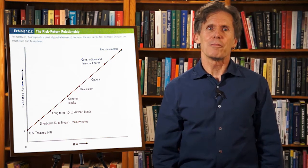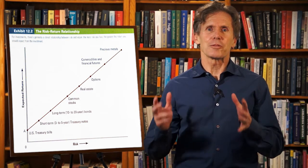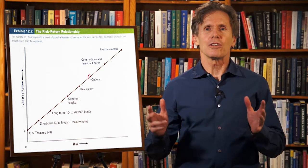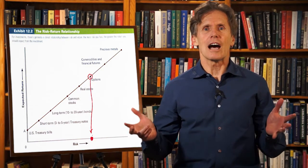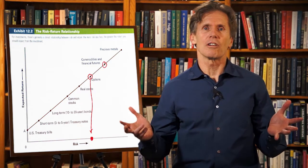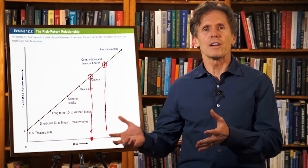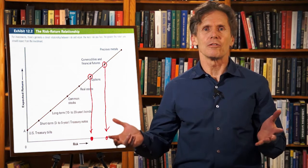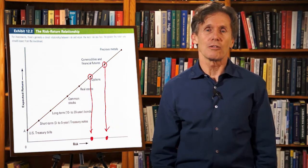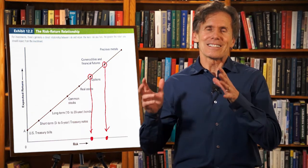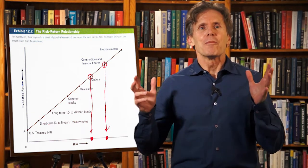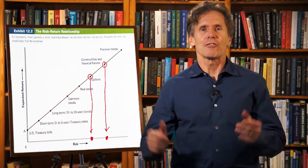The biggest problem with the graph is that the expected return on options and futures isn't higher than that of common stocks. The expected return on options and futures is zero. For every dollar that one investor makes trading options and futures, another investor loses a dollar. Yes, these investments are risky, but they're not on average high return.